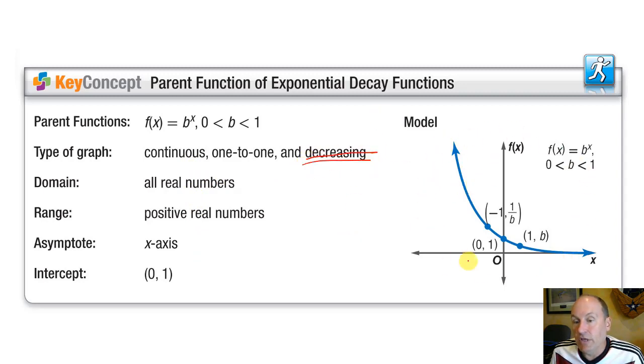A general model of an exponential decay function looks like this. Just like growth is kind of its twin, growth looks like this. So when b is greater than 1, we have a red kind of situation. When b is between 1 and 0, we have this blue decreasing situation.